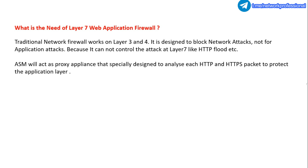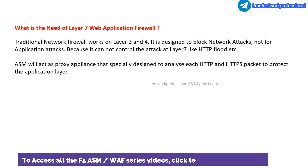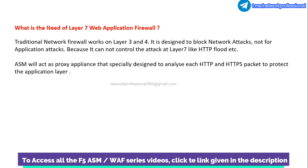Why are we talking about this? Traditional firewalls work at layer 3 and layer 4. In layer 3 and layer 4, traditional firewalls have rules — based on source IP address, destination IP address, and port number — you can allow or deny traffic. These are legacy firewalls operating at layer 3 and layer 4.